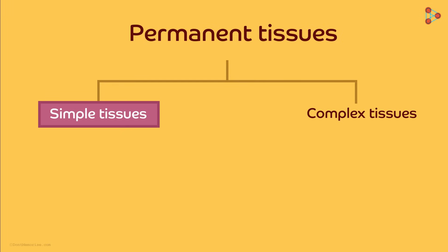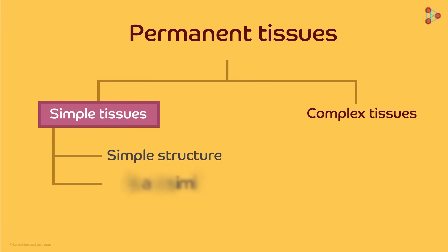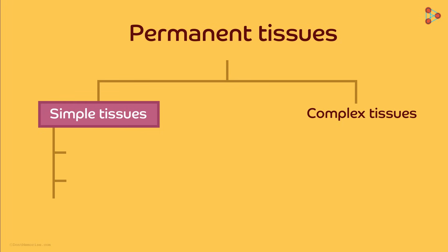The very word simple means they have a very simple structure. All the cells of a simple permanent tissue are almost the same. There are three subtypes of the simple permanent tissue: parenchyma, colenchyma, and sclerenchyma.